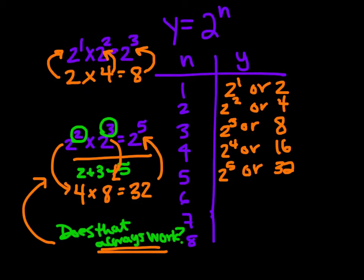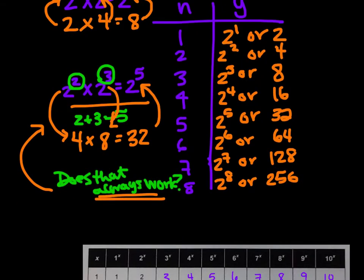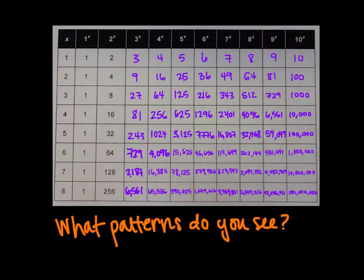Let's finish up this table. We have 2 to the sixth power, which we can rewrite as 64. 2 to the seventh power is 128. 2 to the eighth power is 256. In this investigation for 5.1, you were given a table to fill out. I've completed that table, and now I want to look at some of the patterns within it.